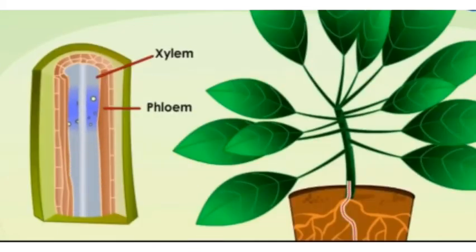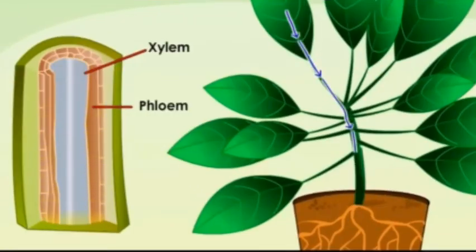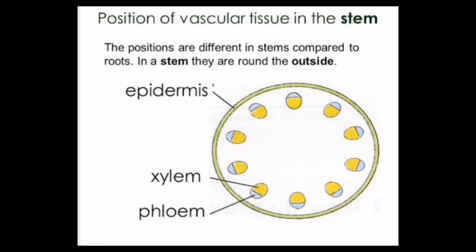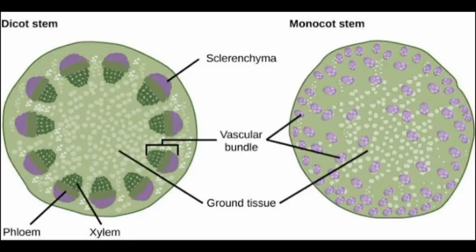Phloem takes food made in leaf to all other parts of a plant, including the roots. See the position and arrangement of xylem and phloem in the vascular bundle of a plant stem.